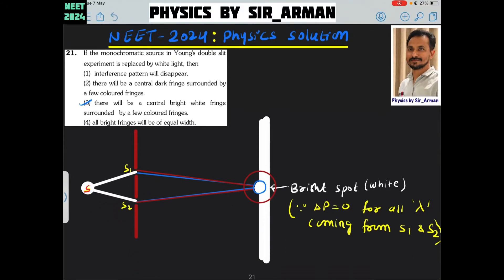Question number 22. If the monochromatic source in Young's double slit experiment is replaced by white light, then?